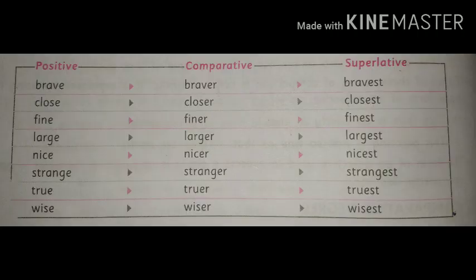The first example is brave, braver, bravest. Close, closer, closest. Fine, finer, finest. Large, larger, largest. Nice, nicer, nicest, and so on. Each word has an E letter at the ending, R is added in the comparative degree, and ST is added in the superlative degree.